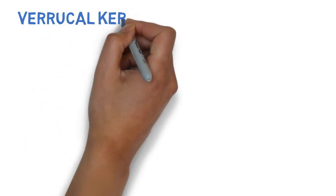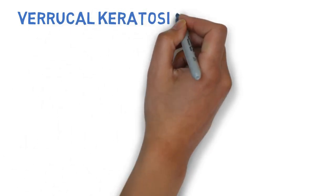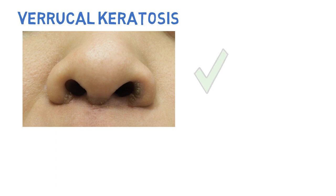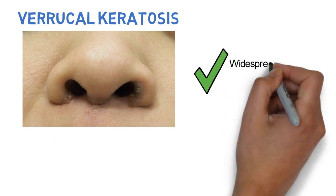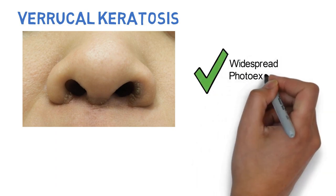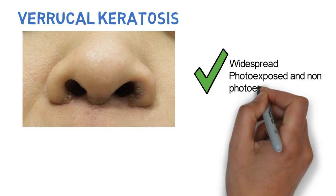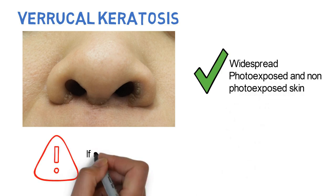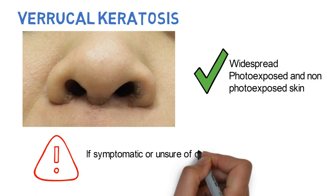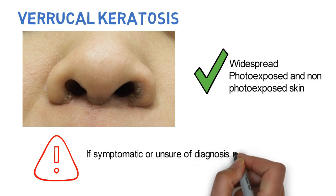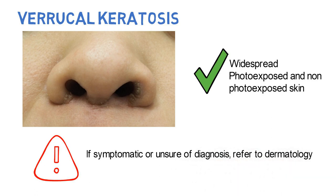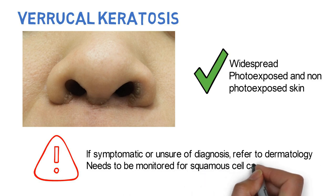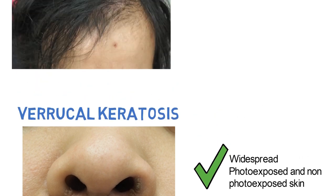Verrucal keratosis is characterized by verruciform, wart-like, white keratotic papules. It is often widespread in distribution and affects both photoexposed and non-photoexposed skin. If the patient is symptomatic or you're unsure of the diagnosis, refer to dermatology. The lesion needs to be monitored for changes suggestive of squamous cell carcinoma.